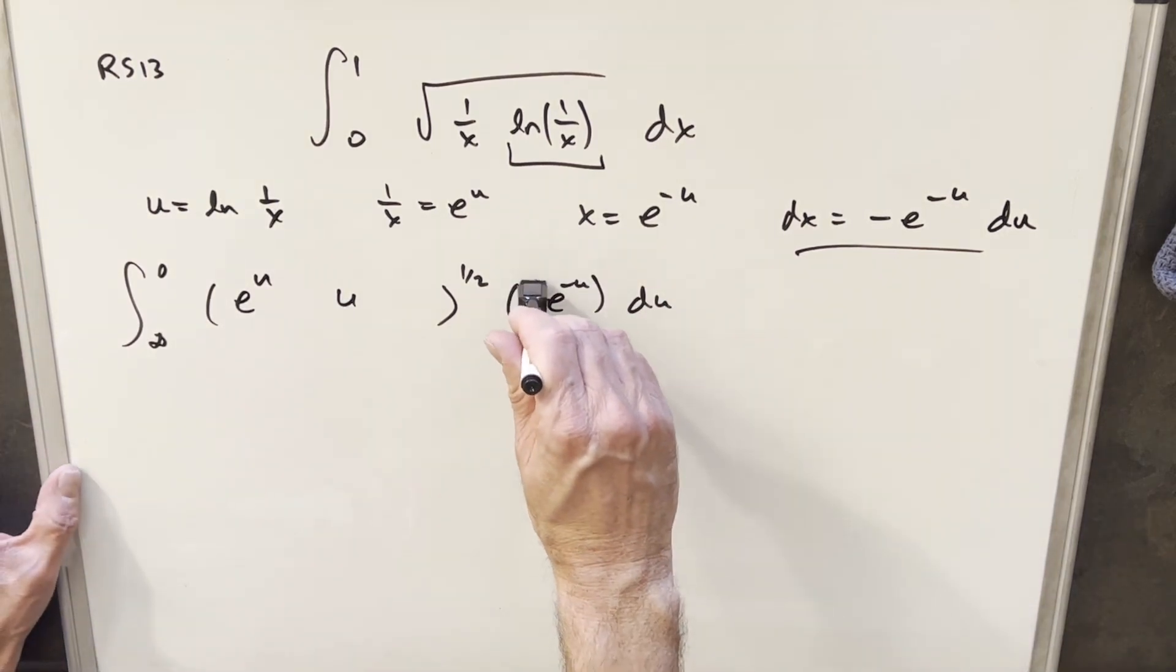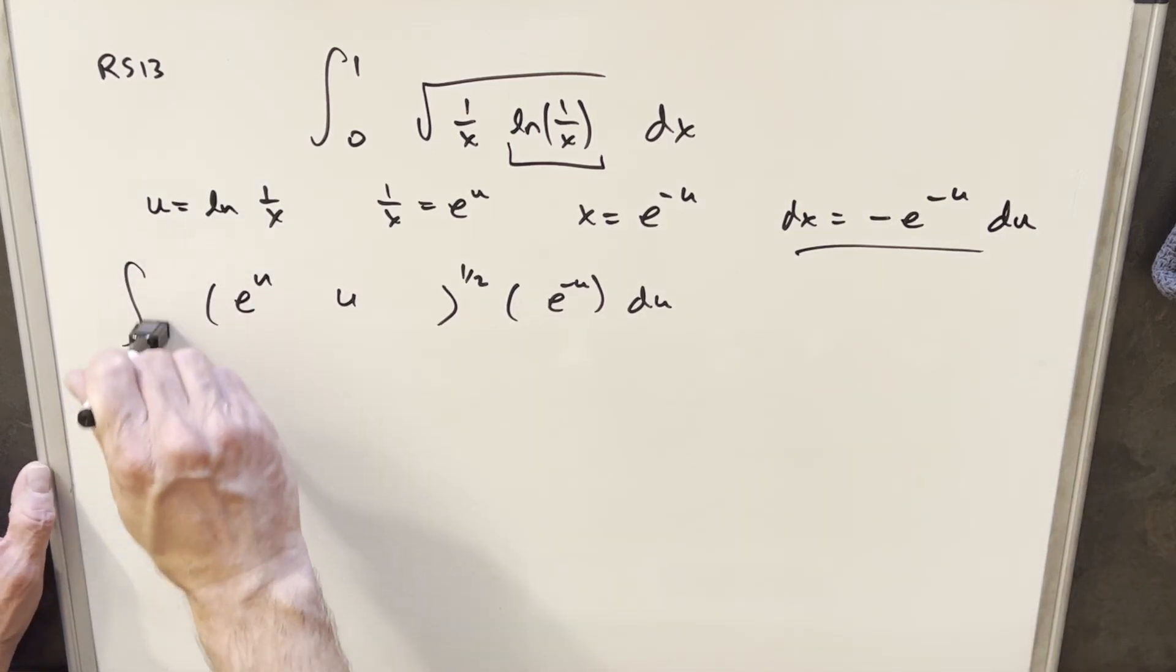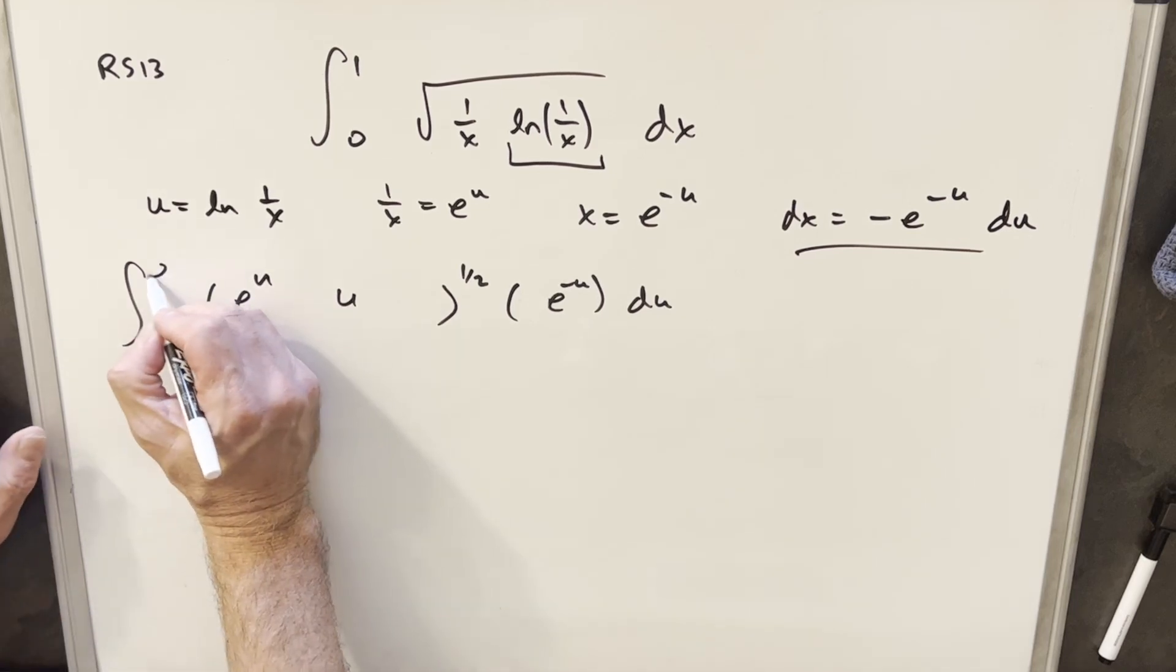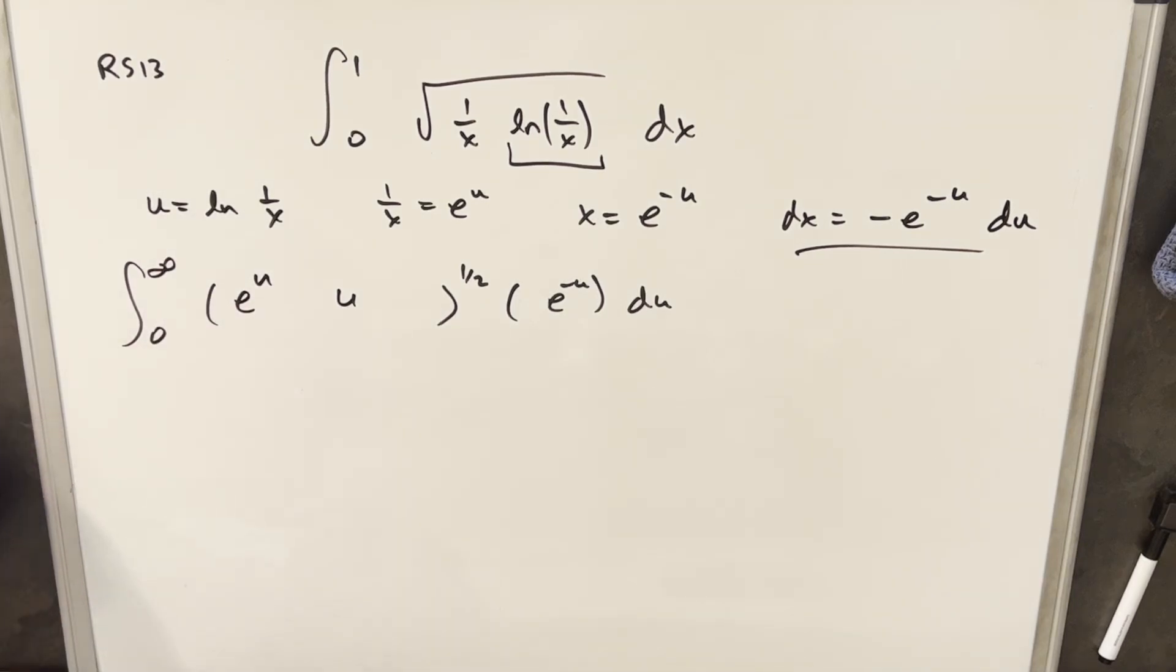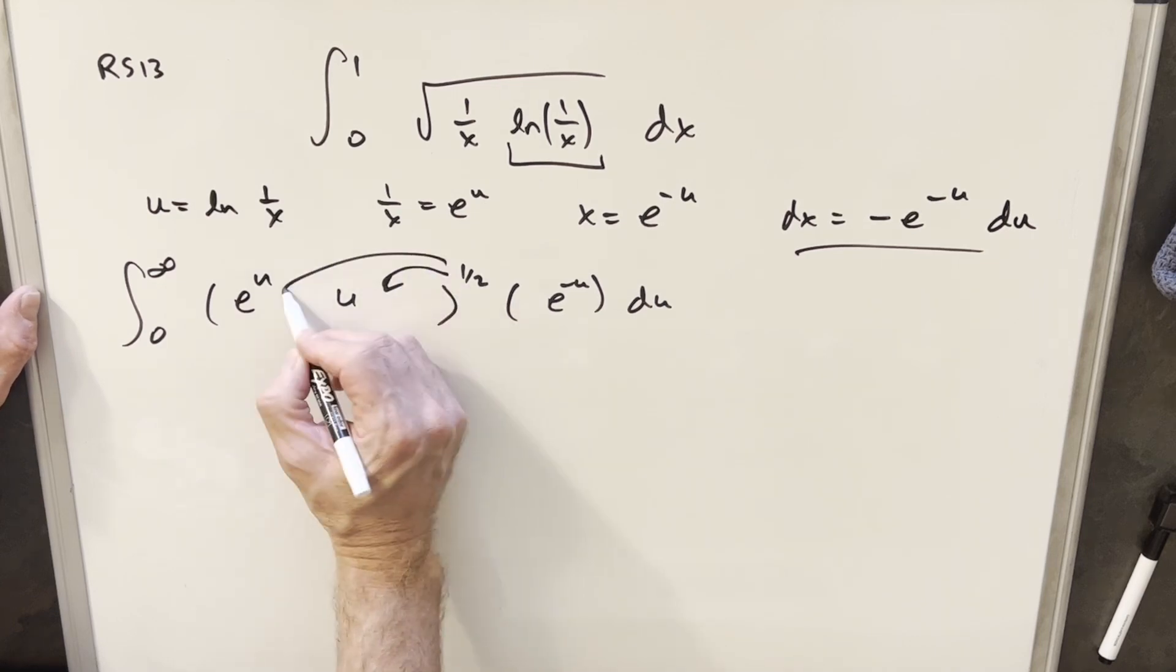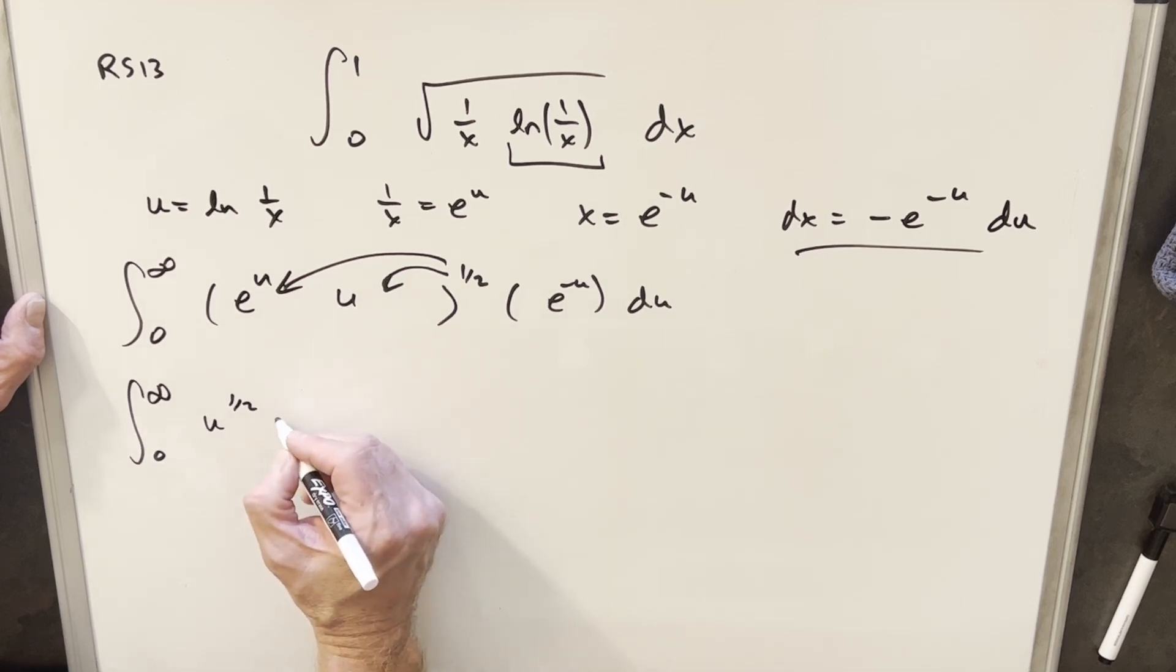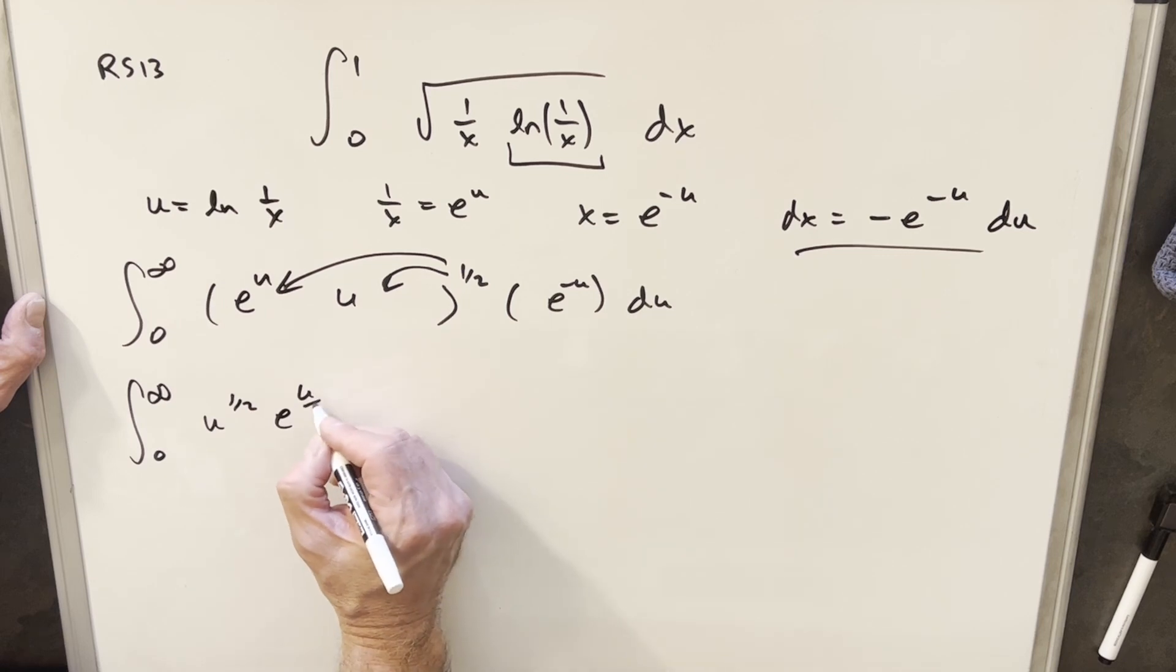I can take this minus sign, bring it up front of the integral and use this to flip my bounds. So instead of going from infinity to 0, we'll put this to 0 to infinity. I want to do some simplification here. I'm going to distribute this half to each of these terms. Rewriting this, we're going to have u to the 1 half, and then distributing the half we'll have e u over 2, e minus u du.